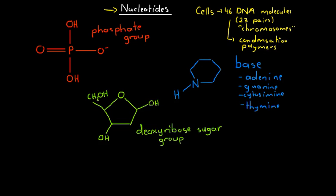These three parts — phosphate, deoxyribose, and base — all bond together via condensation reactions. Here we have a condensation reaction that produces water: we split off a hydrogen from one position and a hydroxyl group from another, giving us a direct bond between this carbon and this oxygen, and producing a water molecule. That's how the phosphate group and the deoxyribose sugar group are bonded together by a covalent bond produced in a condensation reaction.